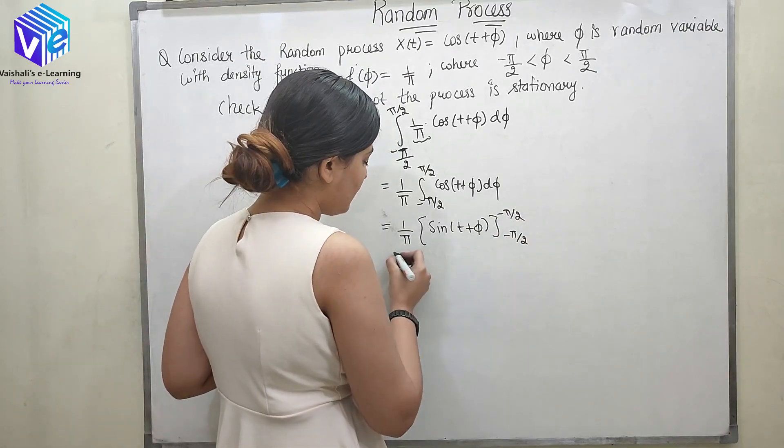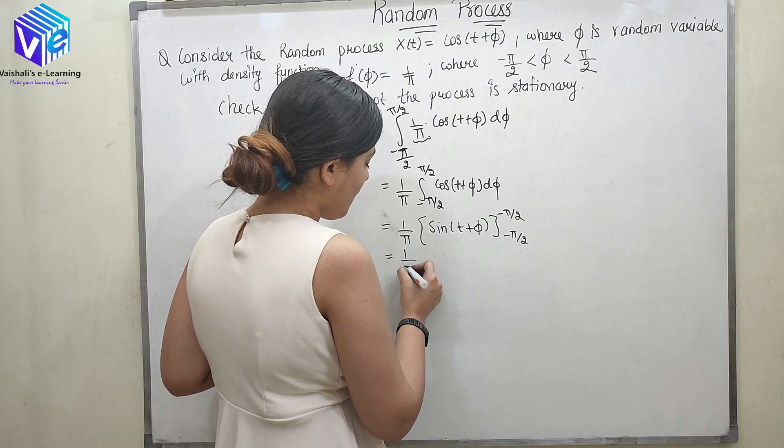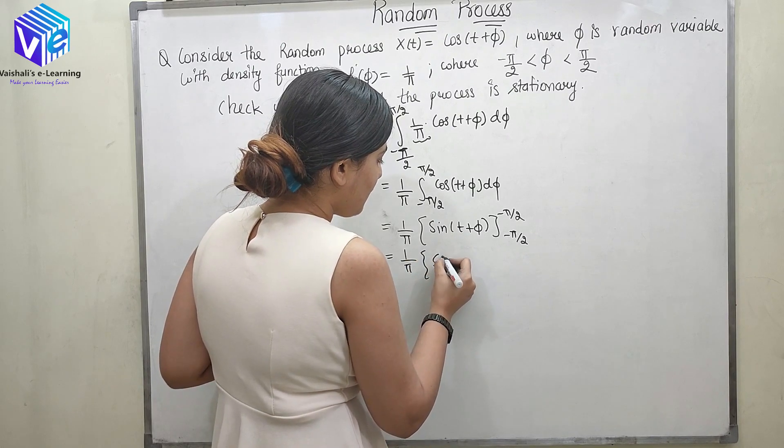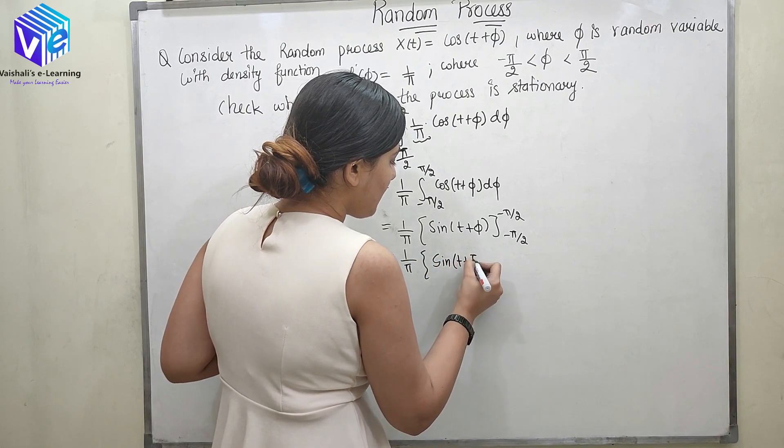Now putting the value of φ = -π/2 and +π/2. So it is sine of (t + π/2).